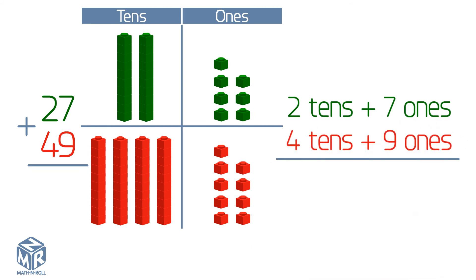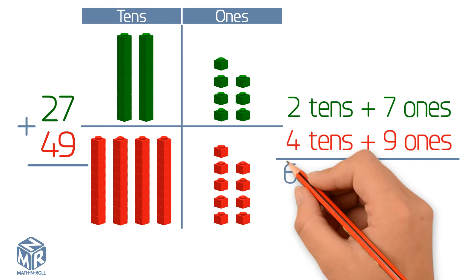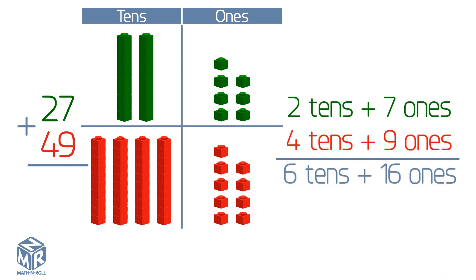Let's add them together. We get six tens and 16 ones, or 60 plus 16, which equals 76. So 27 plus 49 equals 76.